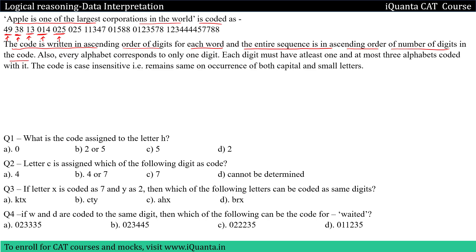This means that when you count the number of digits in these codes — here we have two, here we have two, here we have two, then three, then three, then three, then five, then five. So whatever code we have written for each word, the number of digits is also in ascending order. We can see we have two, three, five and the number of digits are increasing.